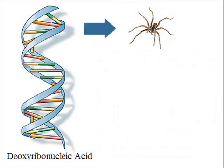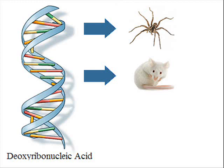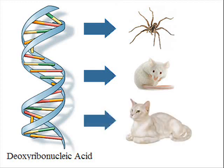It is the information of the genome of a spider, for example, that produces a spider. It is the information in the genome of a mouse which produces the structural design of a mouse and much of its biochemistry. Likewise, the same is true of a cat and all other kinds of life.